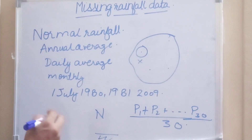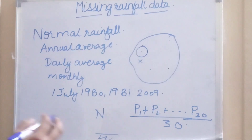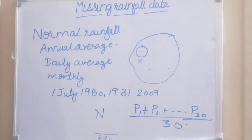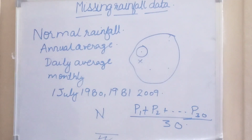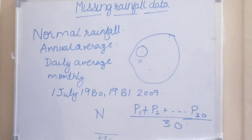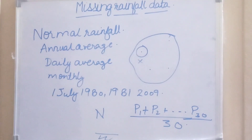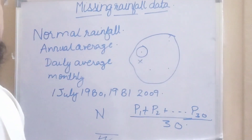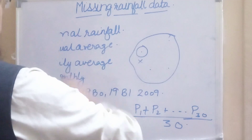Similarly we can have the annual average — we take the average rainfall for each of 30 years and again average it by dividing by 30. This gives the normal annual rainfall. The normal annual rainfall is updated after every decade, that is after every 10 years, we recalculate this for estimating the normal rainfall.